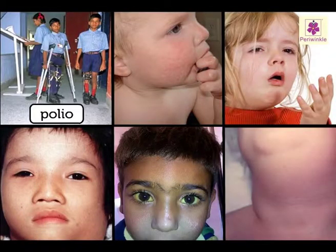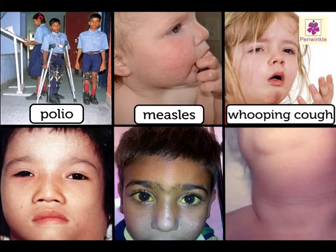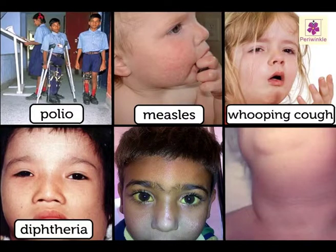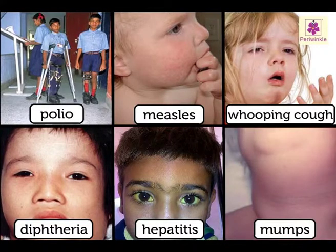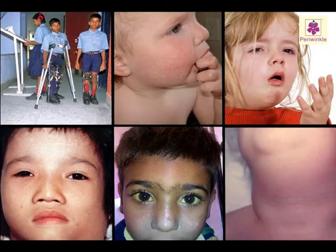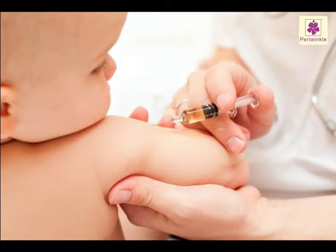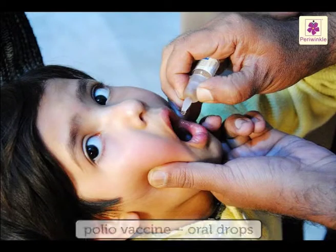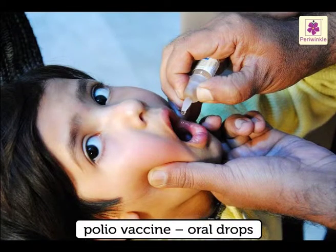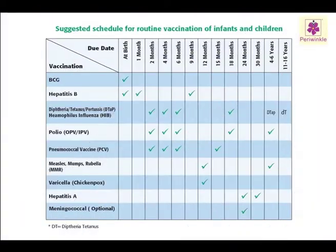Polio, measles, whooping cough, diphtheria, hepatitis, mumps and more can be controlled through vaccines. Most vaccines are injected into the body. Polio vaccine is given through oral drops. Look at the vaccination chart of the different vaccines given to children.